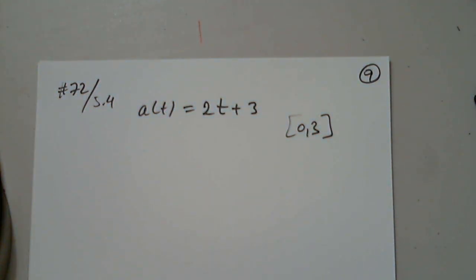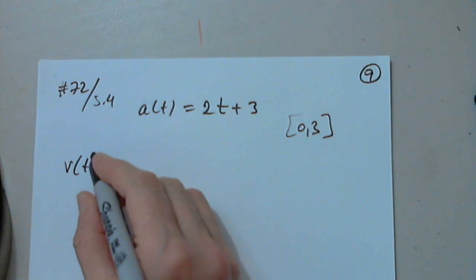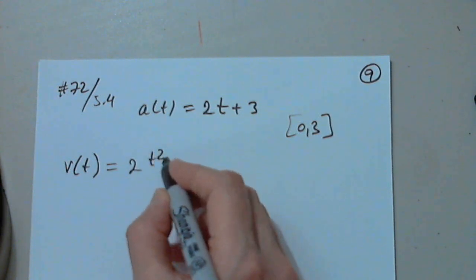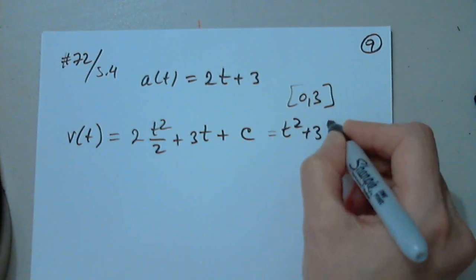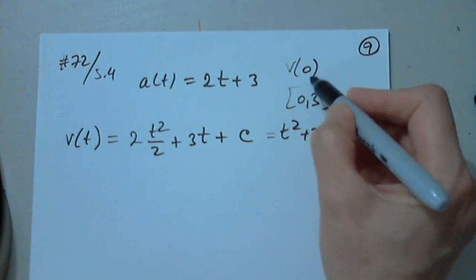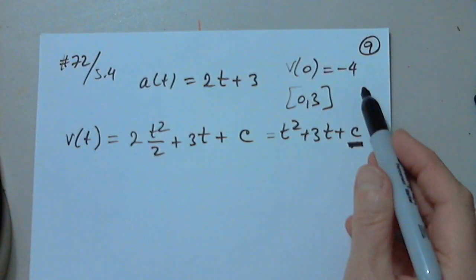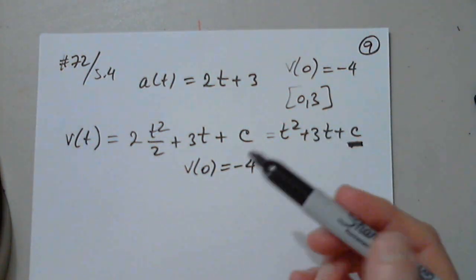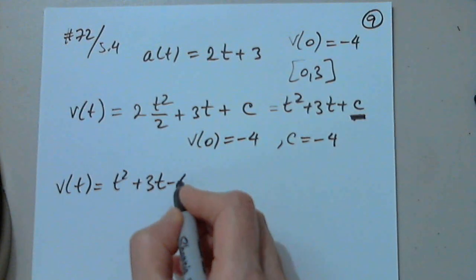So for the velocity, they're not asking us to find the displacement on this one. Correct. So v of t will be 2t squared over 2 plus 3t plus a constant c, which is t squared plus 3t plus c. So they're giving us a v of, what did you say, I didn't write it. V of 0 equals negative 4. Thank you so much. So this is given so we can find c. So 0, 0, c equals negative 4. Because v of 0 equals negative 4 means negative 4 equals 0, 0, c. So then c equals negative 4. So then the velocity is t squared plus 3t minus 4. Perfect.